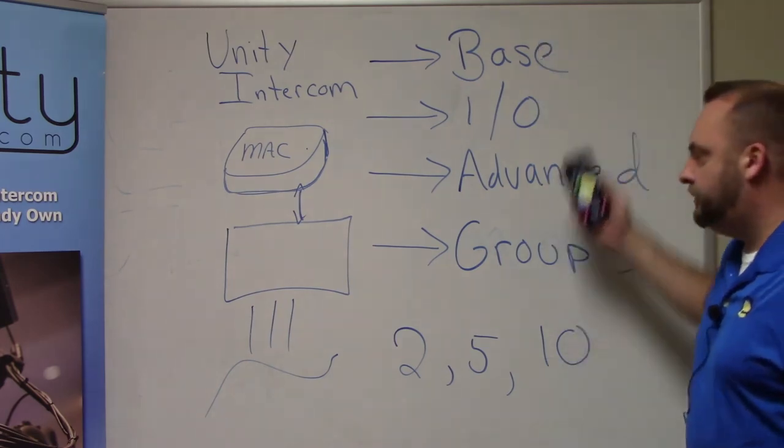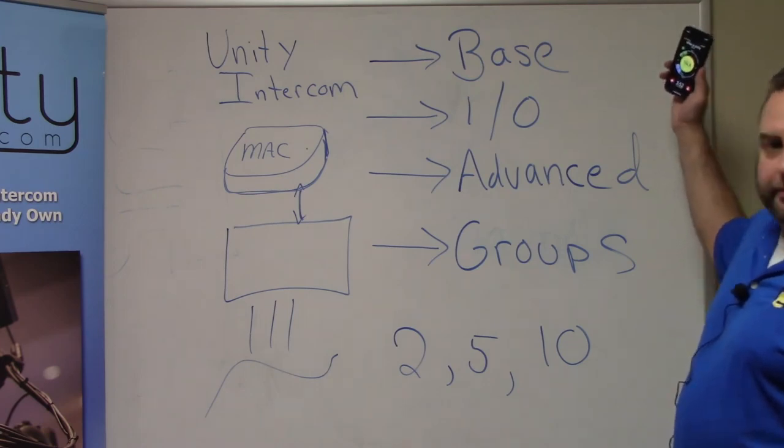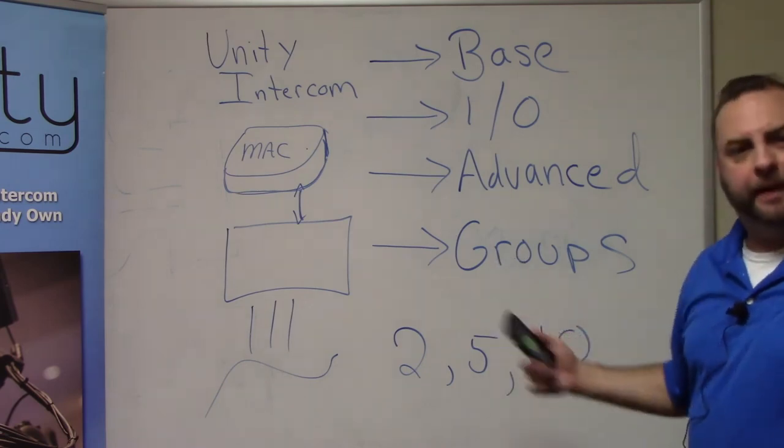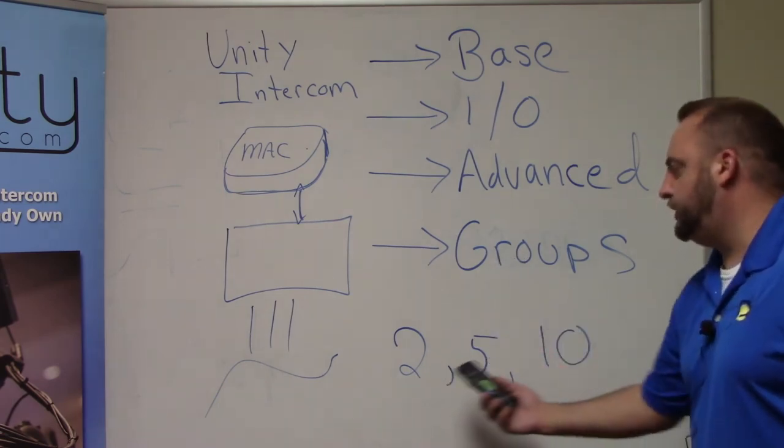And that is basically all you need to know. This is the most, you know, 95% of our systems out there are a base and IO, the advanced, maybe the groups depending if you have enough people to make it make sense, and then a bunch of user licenses.